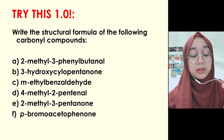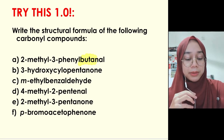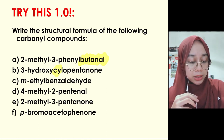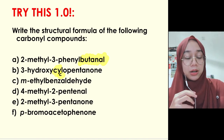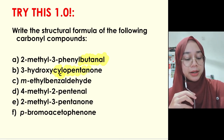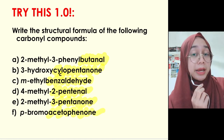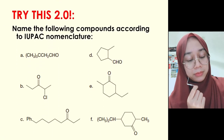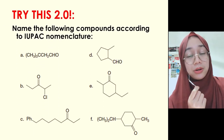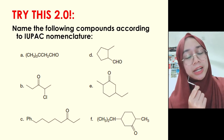Now try these practice questions. First, write the structural formula of the following carbonyl compounds — draw the parent chain first, then add the substituents. Be careful: some use common names, so refer back to how to draw those structures. Second, give the IUPAC name for the following compounds — find the parent chain first, then add the substituent names. Good luck.